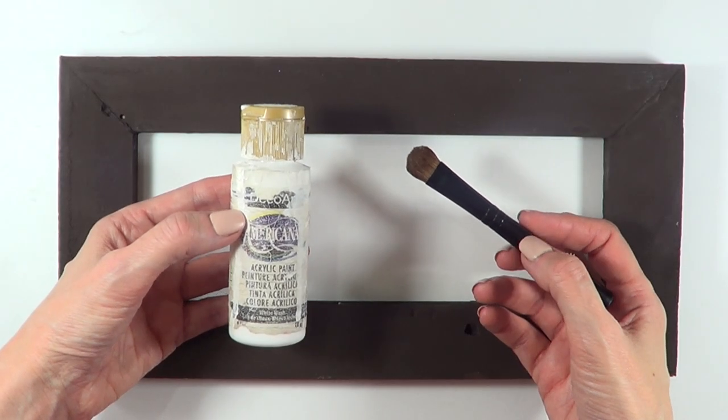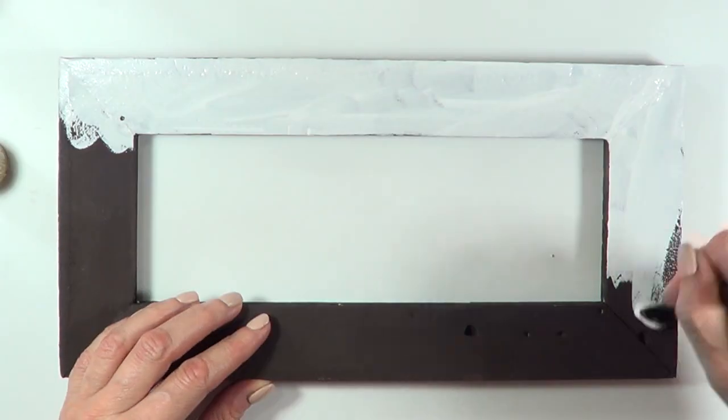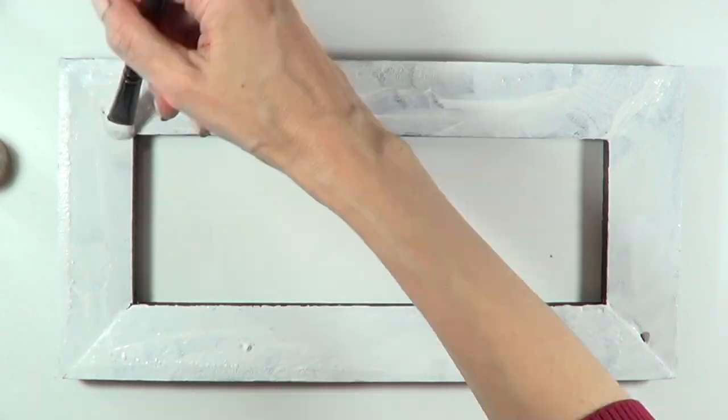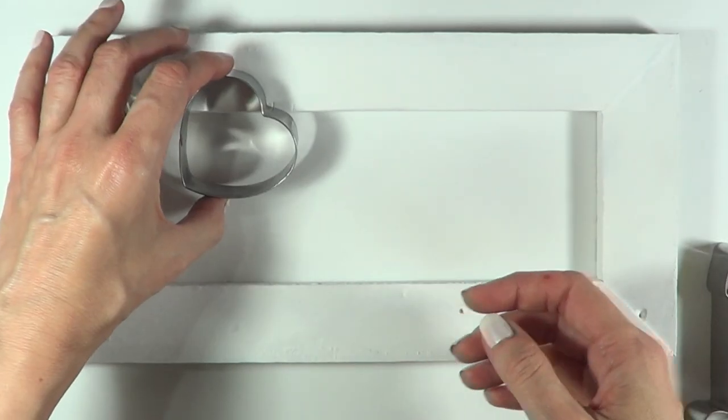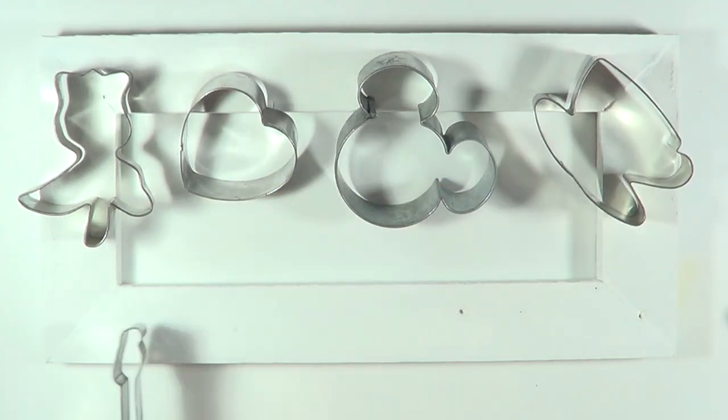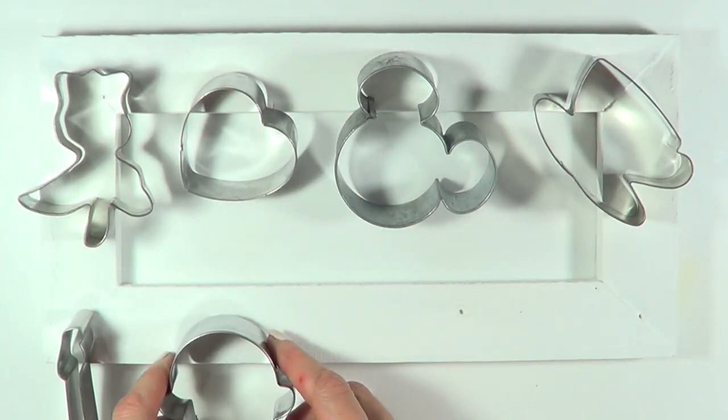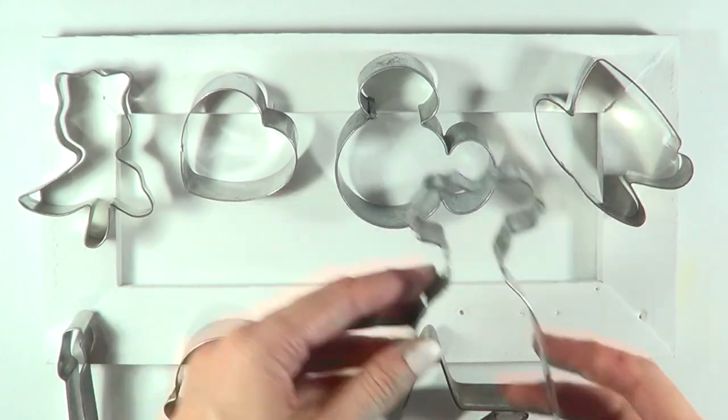I'm going to paint it first with some white acrylic paint, like a primer, pretty much because this used to be dark. And then I'm going to be arranging the cookie cutters that I want to hang, like the space that I need for each. And I'm going to mark where I want to hang them using my sharpie.